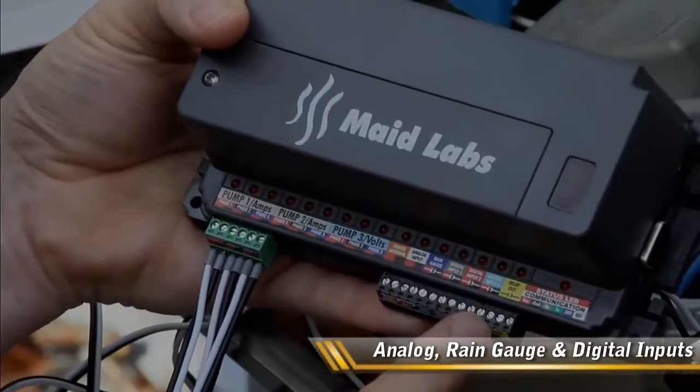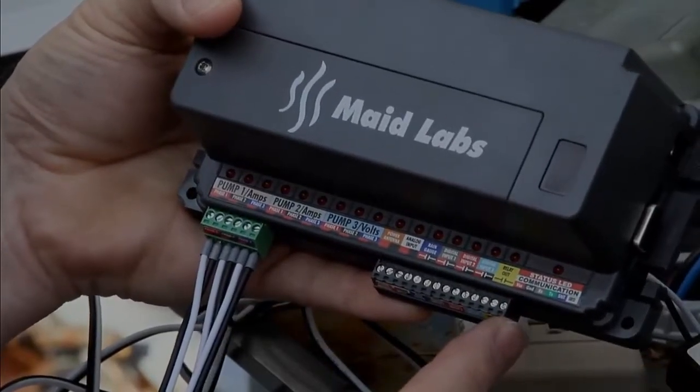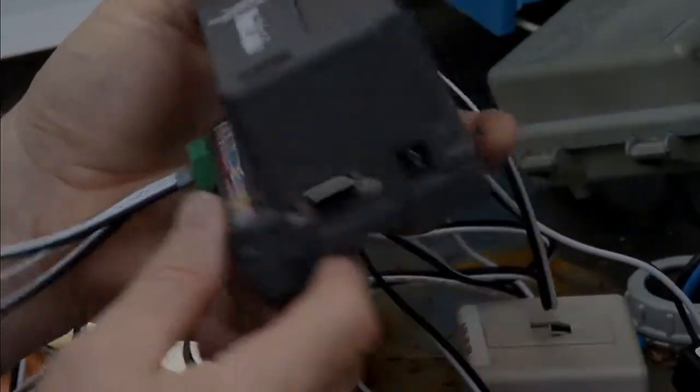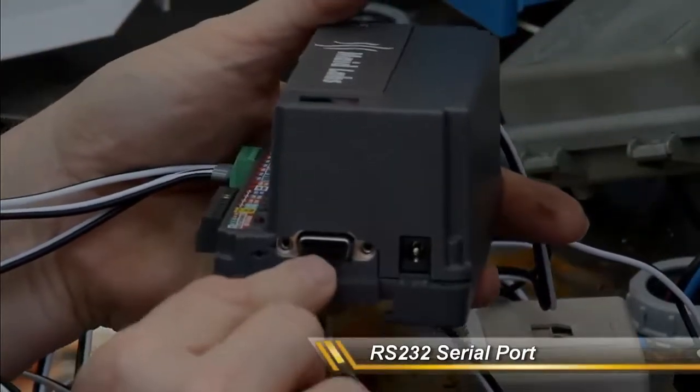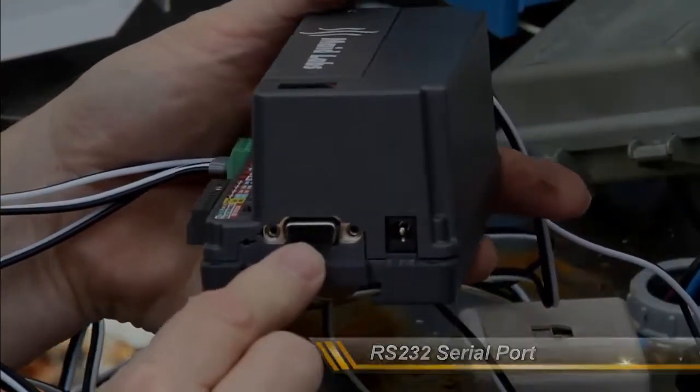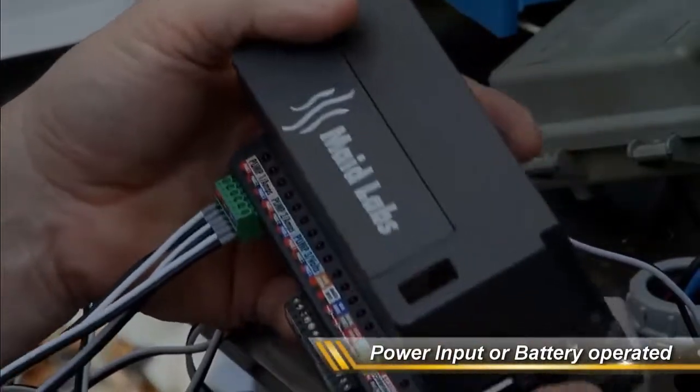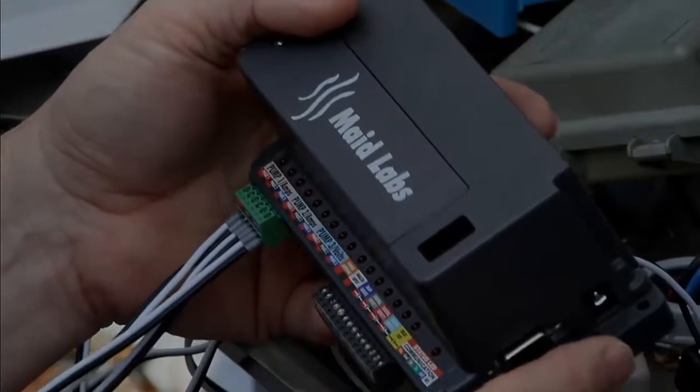We also have a relay output, the status LED for communication. We also have standard communications with a DB9 connection and a power input. You can run this off battery or AC power in the station depending on how long you want to monitor.